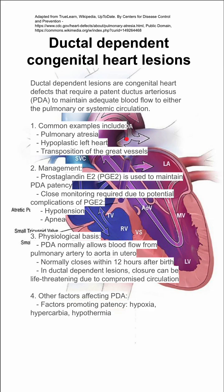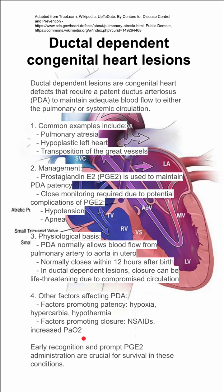There are other factors that affect the PDA. Things that promote patency include hypoxia, hypercarbia, and hypothermia. So sometimes you'll actually run patients at a lower pulse ox — maybe 85 to 90 — in order to keep that PDA open. Factors promoting closure are NSAIDs and increased PAO2. So again, sometimes you want to have a lower PAO2 than you would in a healthy child in order to keep that PDA open.